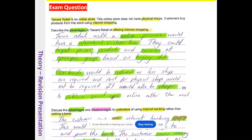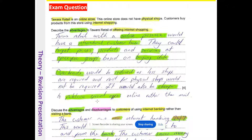Here is a typical exam question: 'Our Retail is an online store with no physical shop. Customers buy products using internet shopping. Describe the advantages to Our Retail of offering internet shopping.' The answer focuses on the shop, not the customers. Our Retail would have an international customer base; they could target prices, products, and services to specific groups based on buying data; cookies could be used to suggest items. Overheads are reduced as less staff and no rent for physical shops are required. It is also cheaper to publicise special offers online rather than printing newsletters.